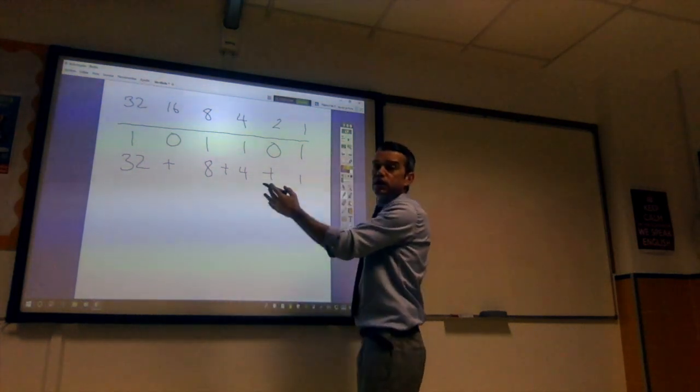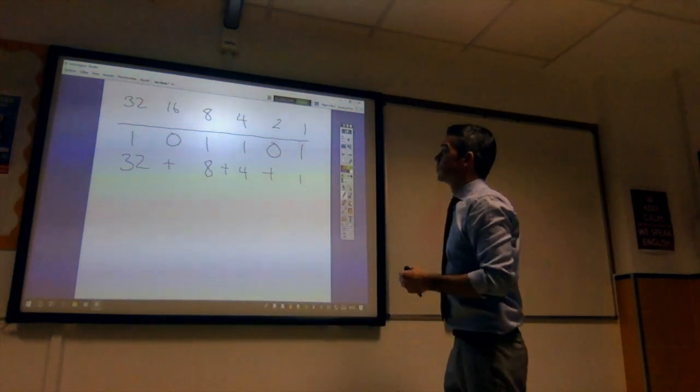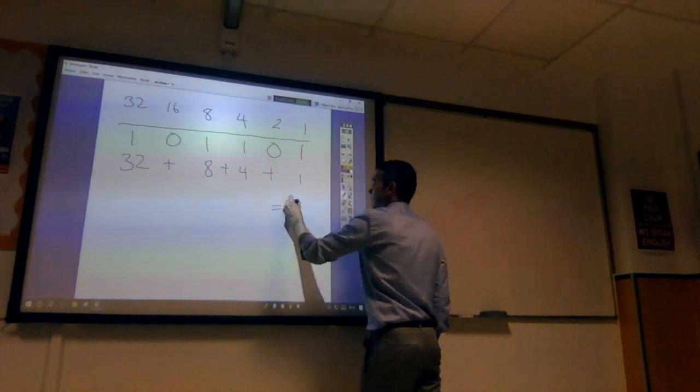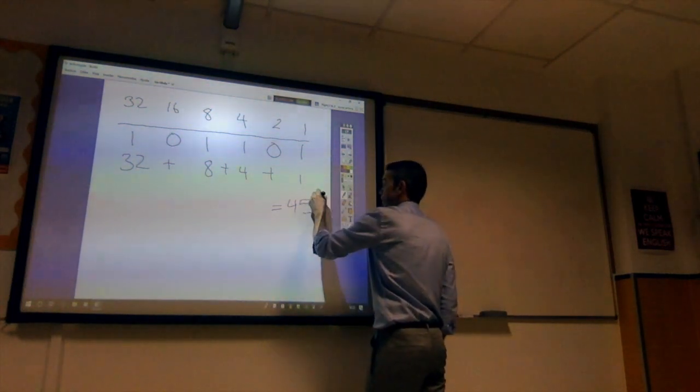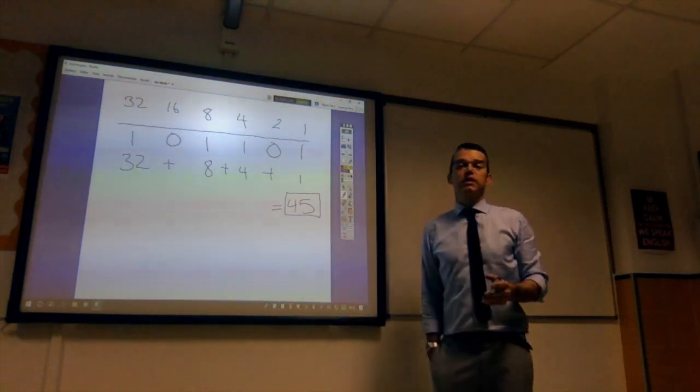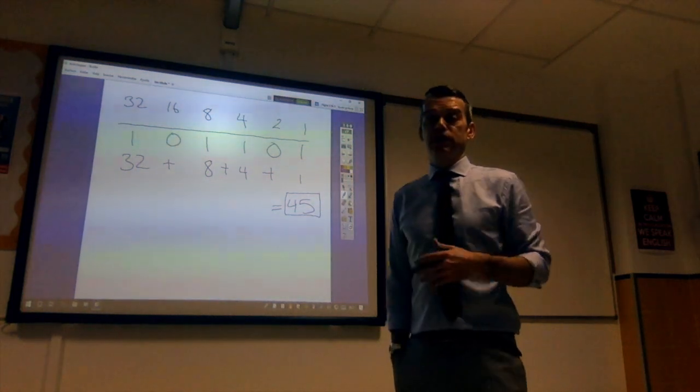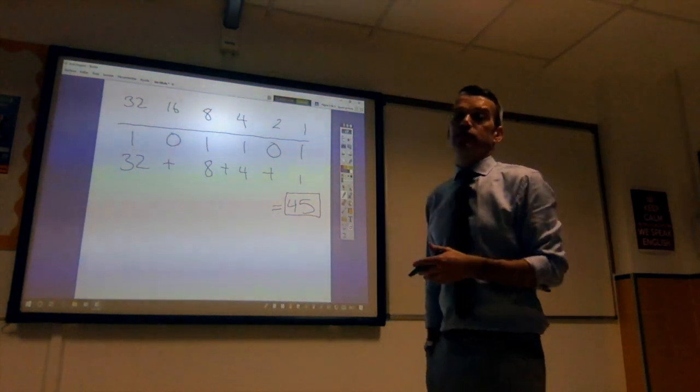So 32 and 8, 40. Plus 4, 44. Plus 1, 45. And that is our answer. So that's how we convert from binary into the denary or decimal equivalent.